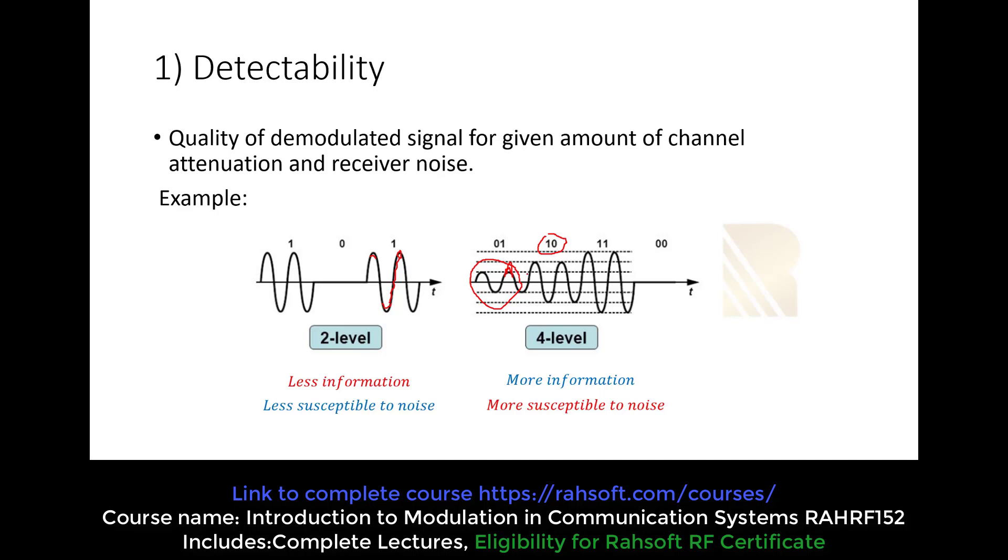That's why we say the system at the right, the modulation on the right side, is less detectable. We can say the left side is more detectable and right side is less detectable because when we have noise in the system, it may cause a problem for the modulation at the right side.